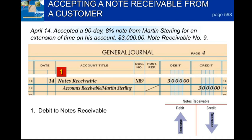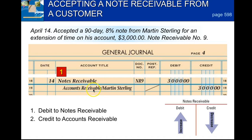We write the date, then notes receivable — document number is nine — and it's for a debit of $3,000 for the extension. Then we're going to credit accounts receivable for Martin Sterling and credit them $3,000, putting the diagonal line as well representing two accounts here.